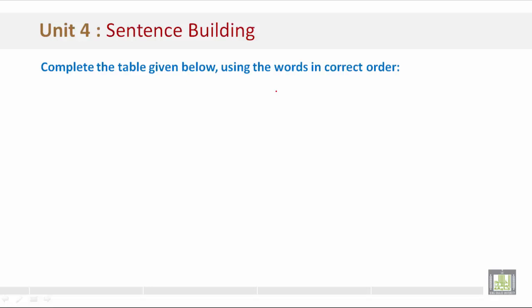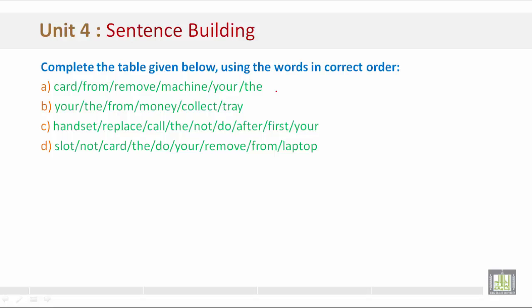Complete the table given below using the words in correct order. As we can see, we have examples A, B, C and D out of order. Now let's look at the table.